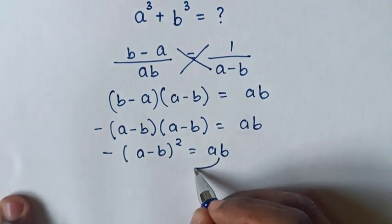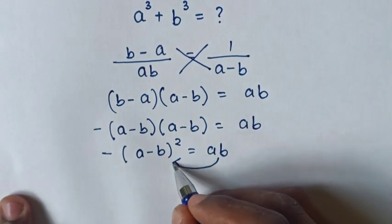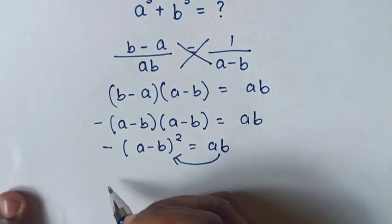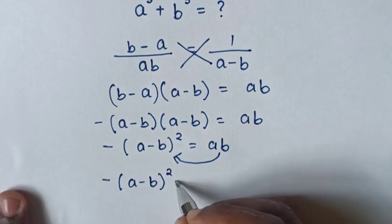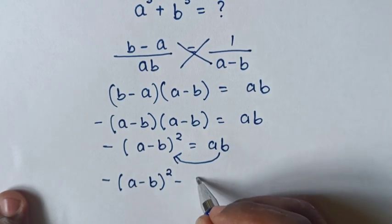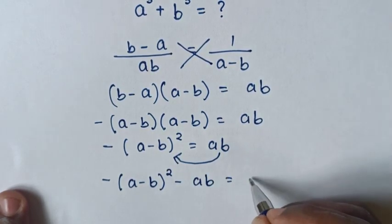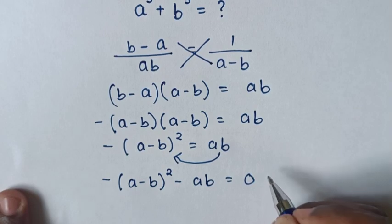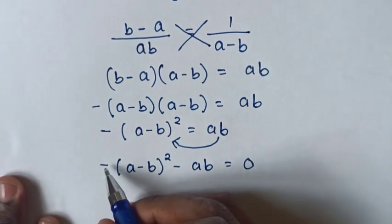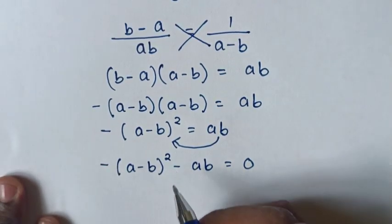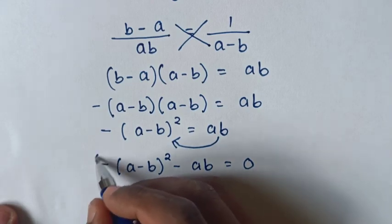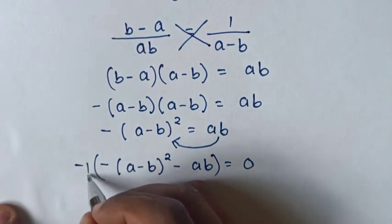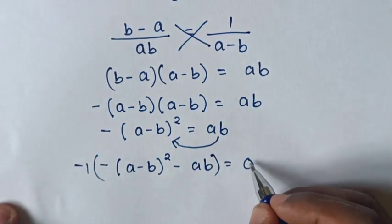Next step, we take ab to the left side. So it will be minus bracket a minus b squared minus ab is equal to 0. From here we can see negative is common, so we multiply by negative 1 on both sides.